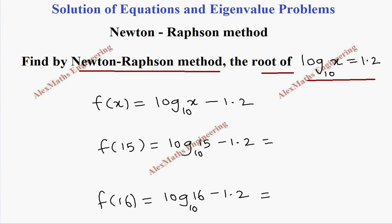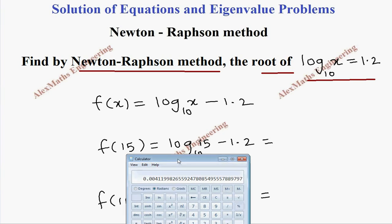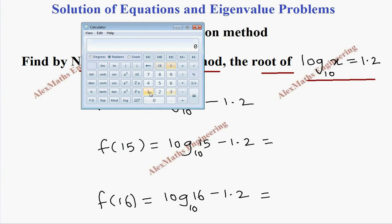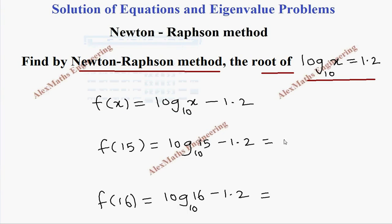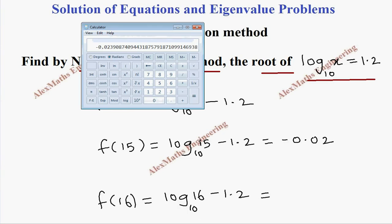Let's write the value here. Let's calculate again. So we need 15 log of that value minus 1.2. When I round off, it will become minus 0.02. Then coming to the next value, 16. So log of that value minus 1.2, this is positive 0.004.